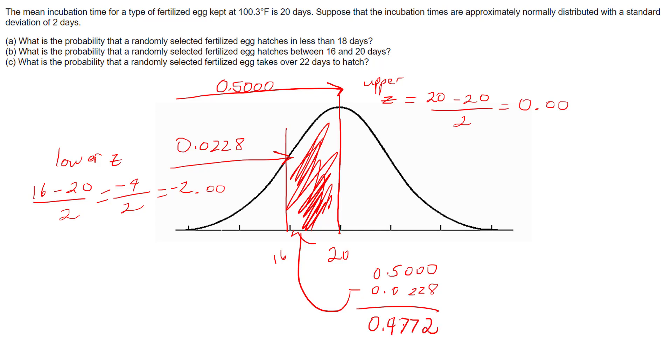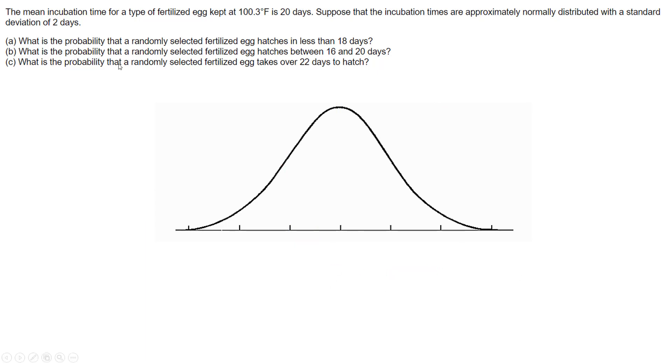Subtracting, the area between 16 and 20 days is 0.5000 − 0.0228 = 0.2772. That is the probability.